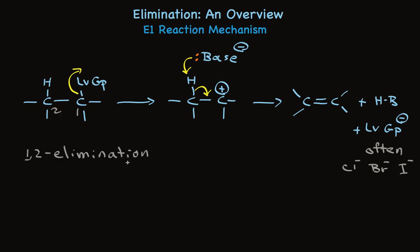There are two steps, and like you would guess, the ionization step is slow. So it's rate-determining, and the second step is much faster. Because there's only one reactant in the rate-determining step, that slow first step, it's called an E1 reaction, elimination first order.